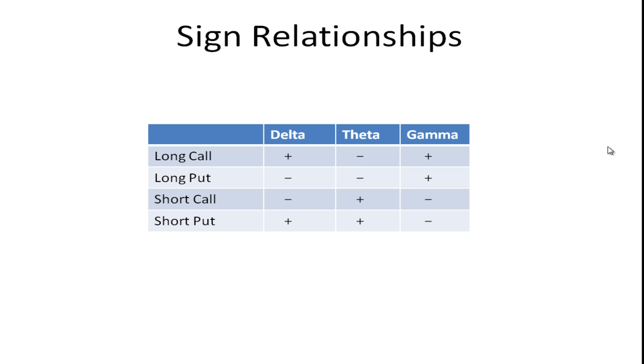And here we have a little sign relationship that is worth perhaps memorizing. If you have a long call position, delta is positive. That makes sense, right? If the stock price goes up, the value of the call is more valuable. Put is negative, because if the stock price goes up, the put gets more out of the money or less in the money. So that's negative. And then obviously if you have opposite positions, these signs change.